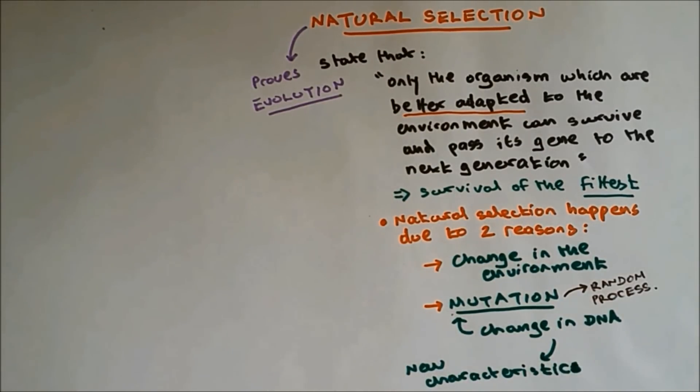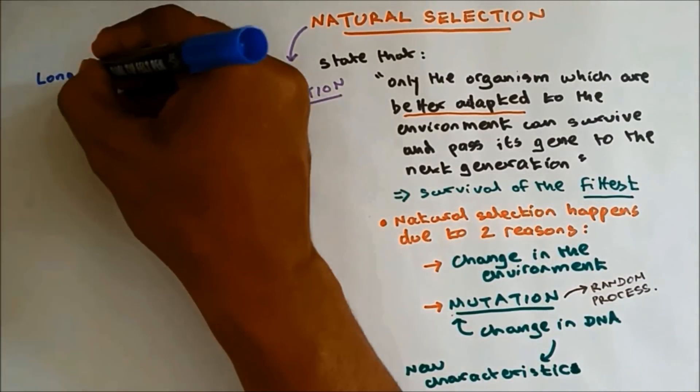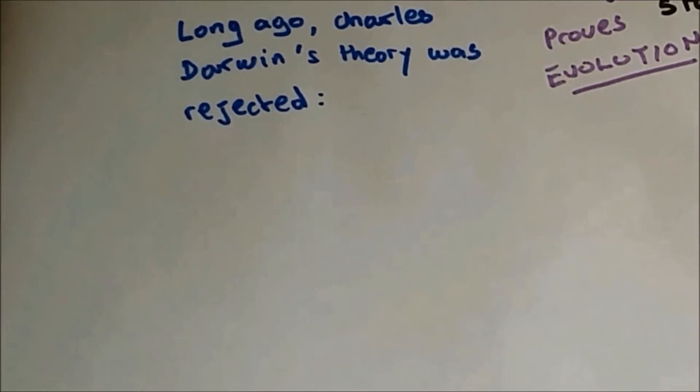Now I'm going to explain why Charles Darwin theory was rejected. It is accepted now, but long ago it was rejected. His theory was rejected due to three reasons.